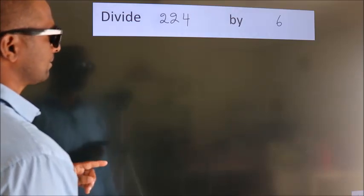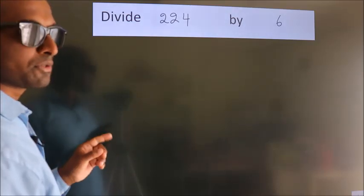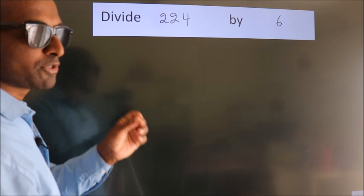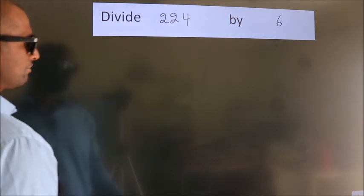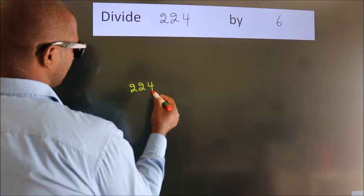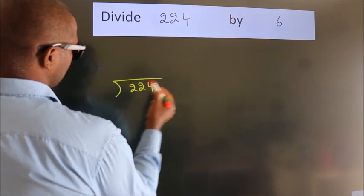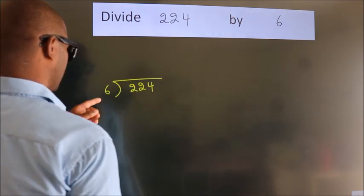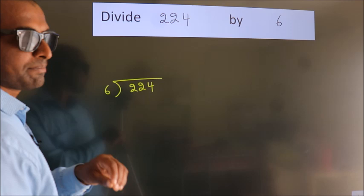Divide 224 by 6. To do this division, we should frame it in this way: 224 here, 6 here. This is your step 1.